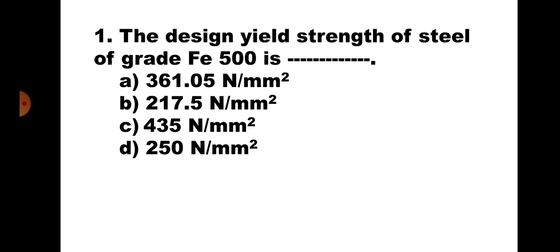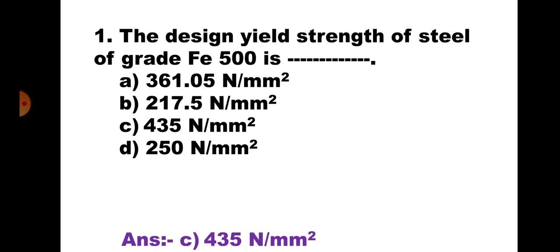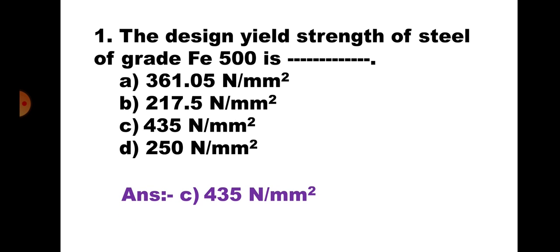Question number one: The design yield strength of steel of grade Fe 500 is — (a) 361.05 N/mm², (b) 217.5 N/mm², (c) 435 N/mm², (d) 250 N/mm². You already know that design yield strength is 0.87 times fy, so if you put fy = 500 you get 435. The correct answer is (c) 435 N/mm².